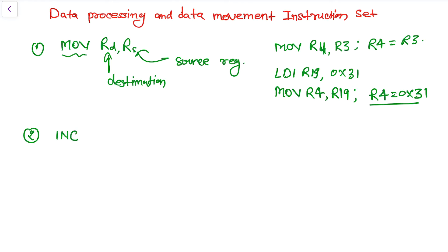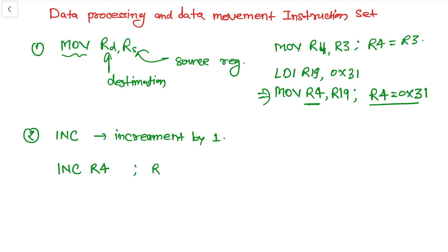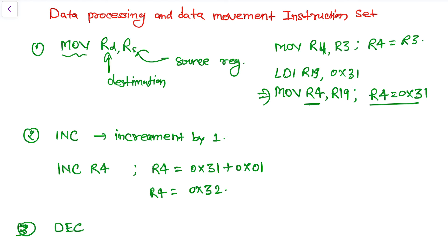The next instruction is INC, which means increment by 1. The value of the register will be increased by 1. For example, INC R4 — after execution R4 will be 0x31 plus 0x01, which equals 0x32. Similarly, we have the DEC instruction, which is decrement by 1.